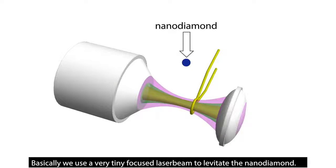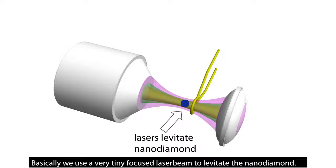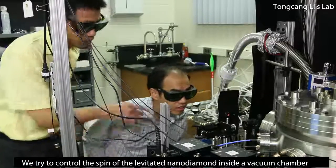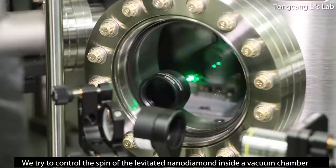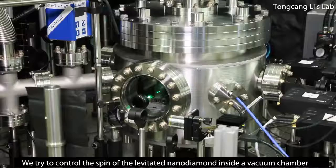Basically we use a very tiny focused laser beam to levitate the nanodiamond. We try to control the spin of the levitated nanodiamond inside a vacuum chamber.